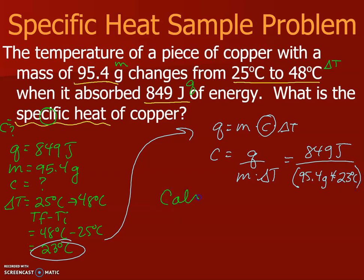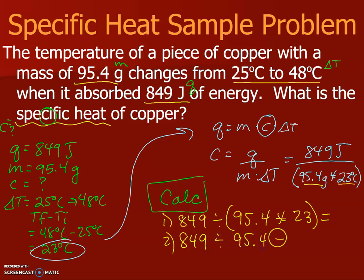Now when I go to put this in my calculator, there's a couple of things you need to be really careful of. I have two denominators, so in the calculator I can put this in one of two ways to get the right answer. I can do 849 divided by and then do parentheses 95.4 times 23 parentheses equals, or I can do 849 divided by 95.4 divided by 23. Remember how when we were doing dimensional analysis and you divide by every denominator, the two d's, that will end up giving you the right value. So push pause, try it. You should get a value of 0.387 joules per gram degree Celsius.